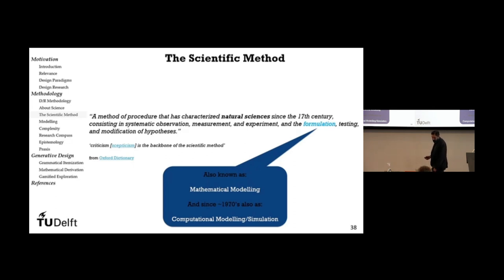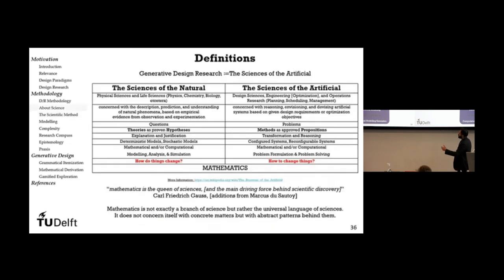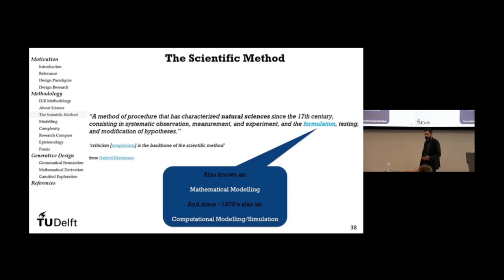The scientific method: a method or procedure that has characterized natural sciences since the 17th century — systematic observation, measurements, experiments, and formulation, testing, and modification of hypotheses. In design, we are concerned with making propositions, so it's slightly different. But our golden keyword here is formulation: how do we formulate our problems?